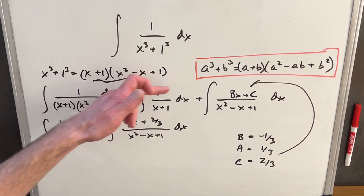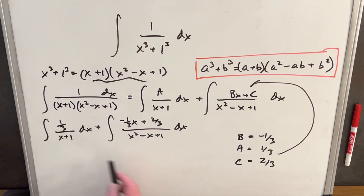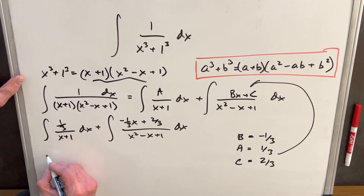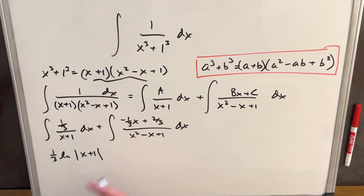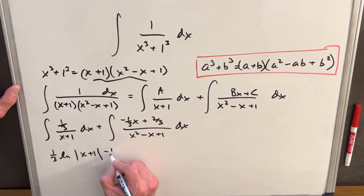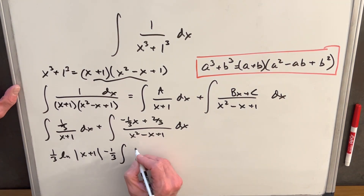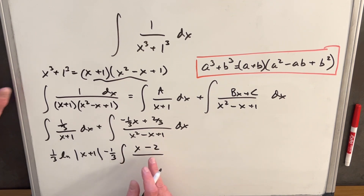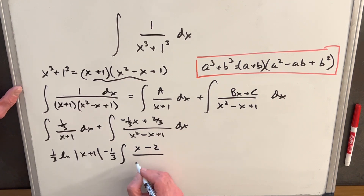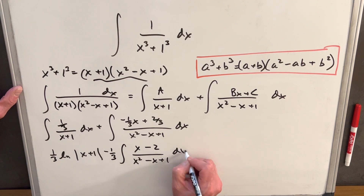Now that we have A, B, and C, we plug them back in and continue with the integral. The first integral is just 1 third natural log absolute value of x plus 1. For the second integral, we factor out negative 1 third, leaving x minus 2 in the numerator — noticing that negative 2 times negative 1 third gives 2 thirds — over x squared minus x plus 1 dx.